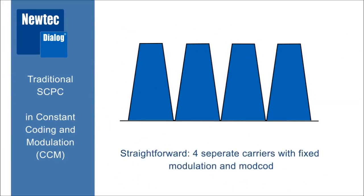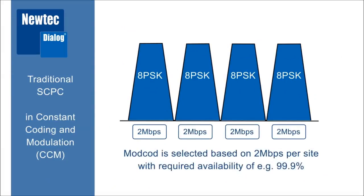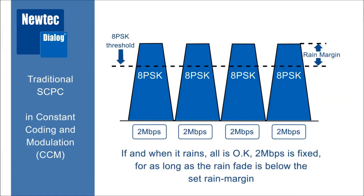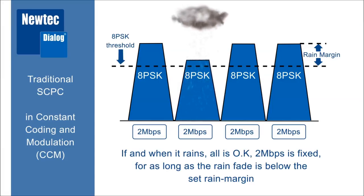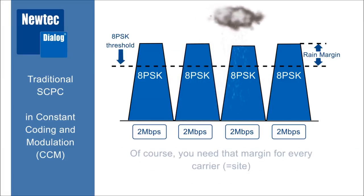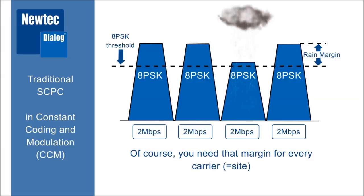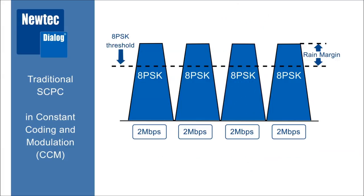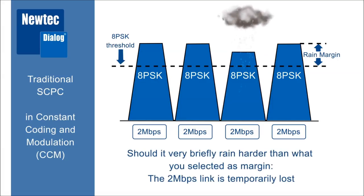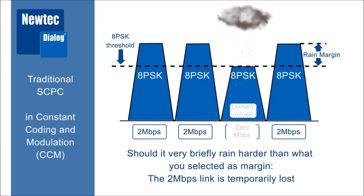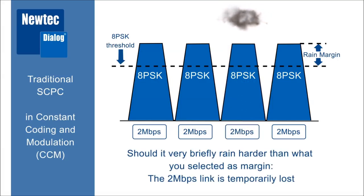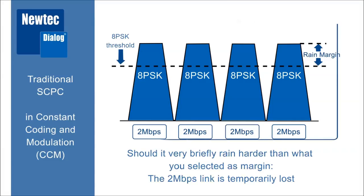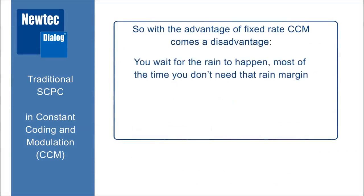With traditional SCPC we have four carriers at a fixed bitrate of two megabits per second. Depending on the required availability, we use four carriers running APSK, as this gives us enough rain margin to accommodate for the effects of rain. For as long as rain fades are within the calculated rain margin, the fixed bitrate is assured. However, in case of exceptional rain fades beyond the rain margin, you lose your link. Traditional SCPC also wastes most of your bandwidth waiting for rain to happen.